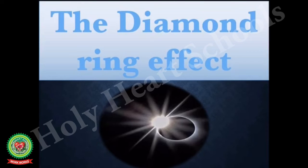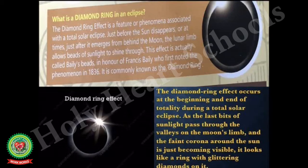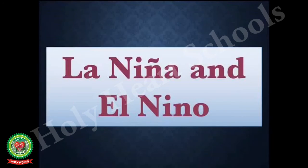The next mystery of the universe is the diamond ring effect, also known as Bailey's Beads effect. The diamond ring effect occurs at the beginning and end of totality during a total solar eclipse. As the last bits of sunlight pass through the valleys on the moon's limb and the faint corona around the sun becomes just visible, it looks like a ring with glittering diamonds on it — this kind of effect is known as the diamond ring effect.